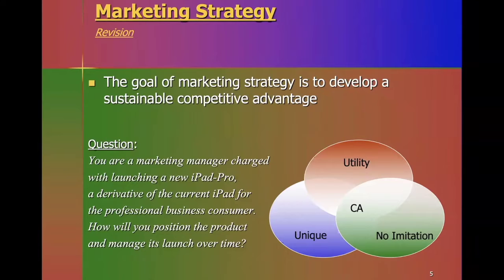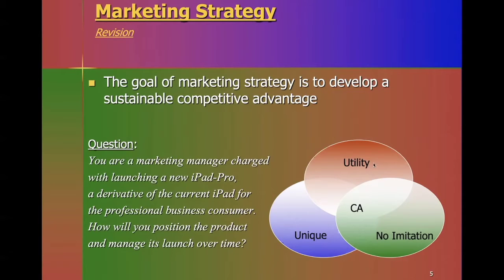A critical focus of marketing strategy is this idea of a competitive advantage — how can we develop and sustain one in the market? We've defined a competitive advantage in relation to three key variables: utility, uniqueness, and no imitation. Utility means there is value — consumers perceive value in whatever offering we're providing them, whether a product or a service. The consumer finds potential value and potential satisfaction in this product. To derive a competitive advantage, we have to know how utility is created and how it's experienced.